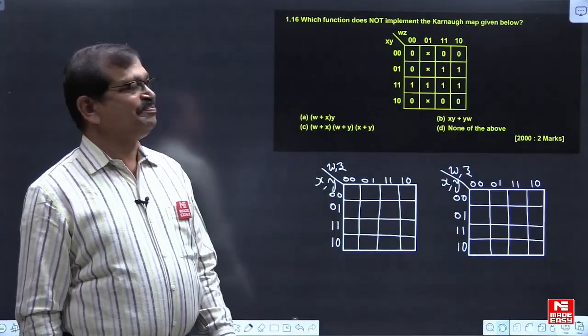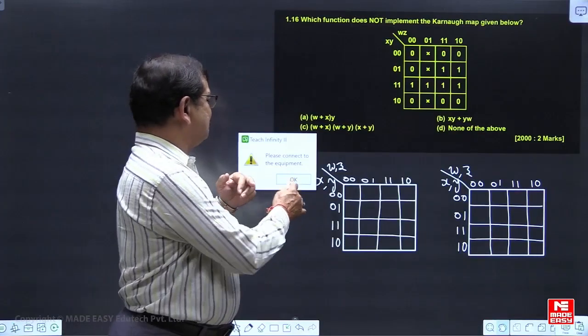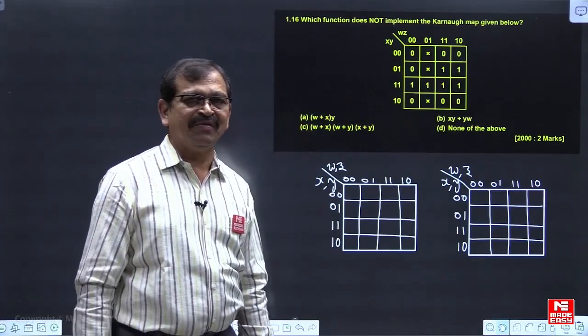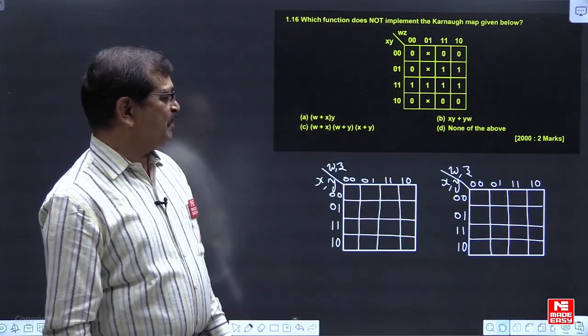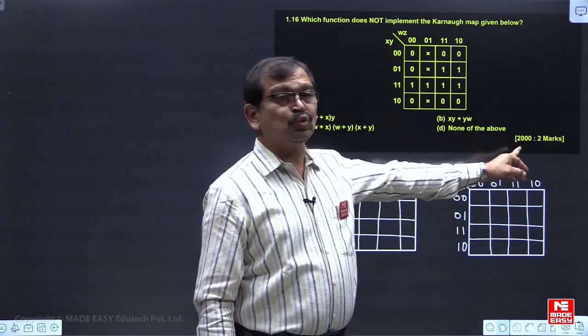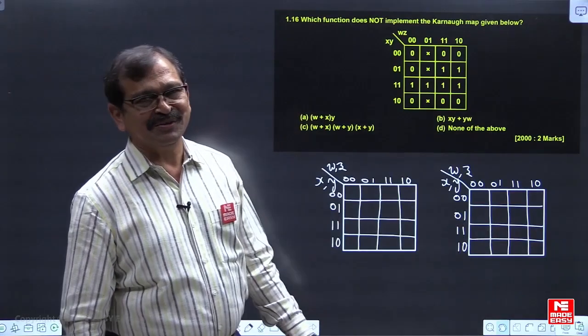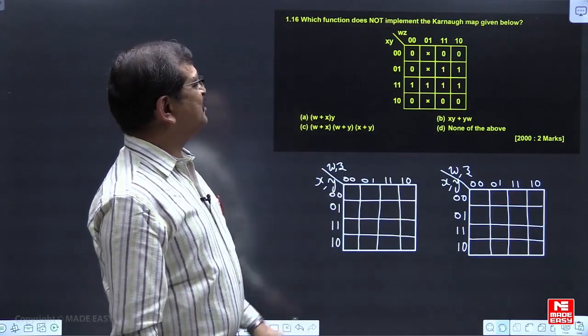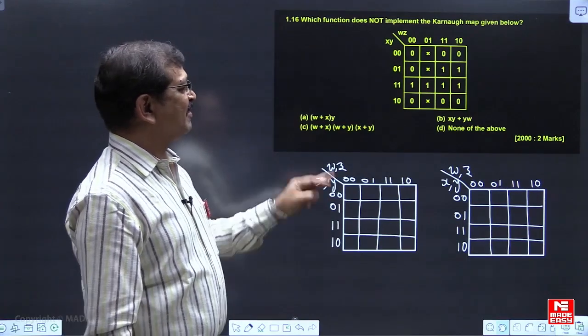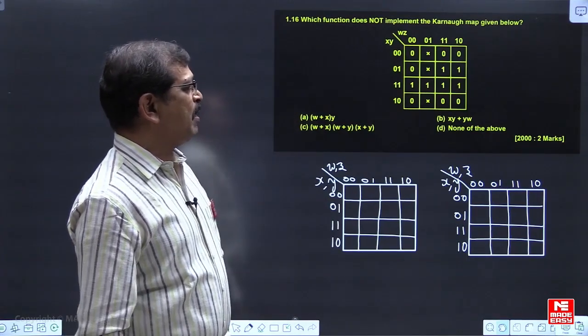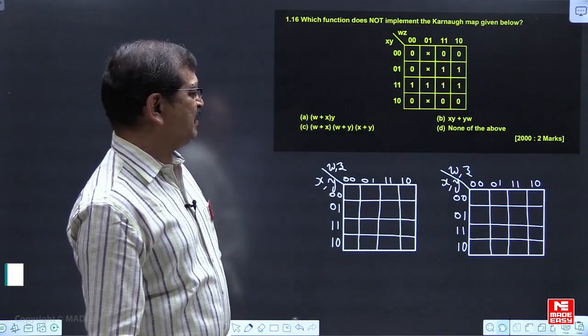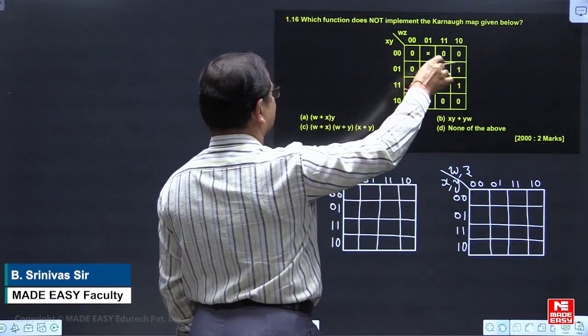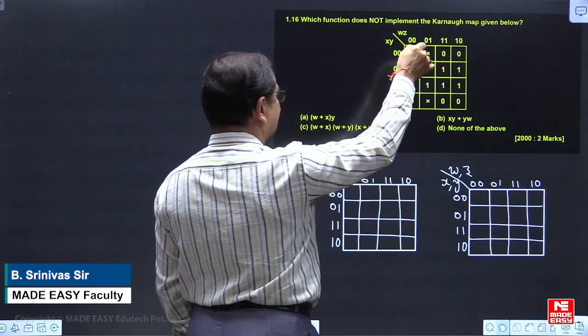We will look at this question. This question is related with the K-map from Boolean algebra work. It was a question for 2 marks in 2000, very long back. Which function does not implement the Karnaugh map given below? I have to ask the question. So this is the function which is basically given in the K-map.